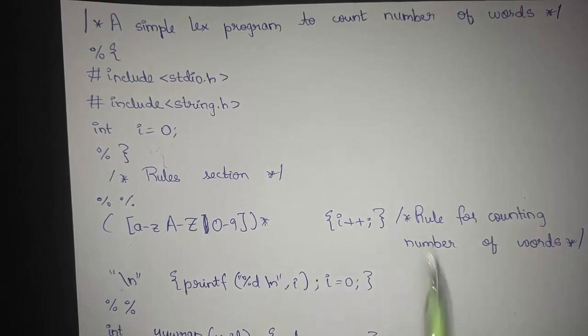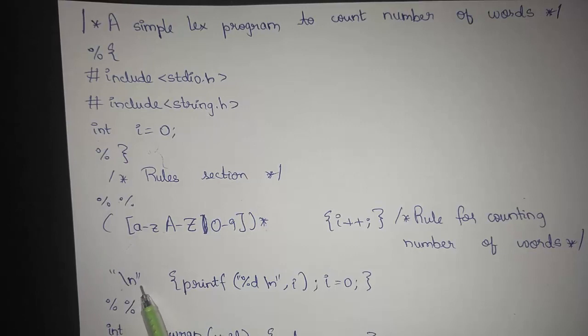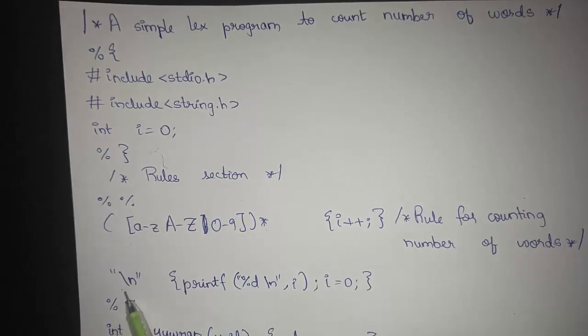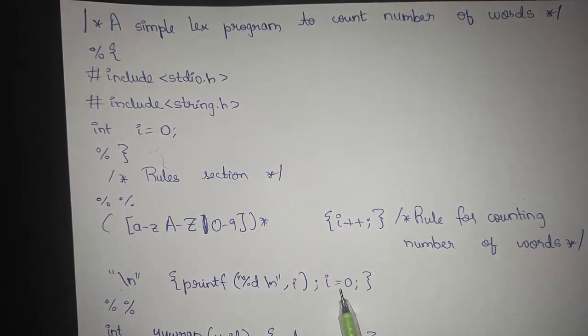Whenever we get a blank space or a new line character we are just printing the number of words and then again initializing or reinitializing i to zero.